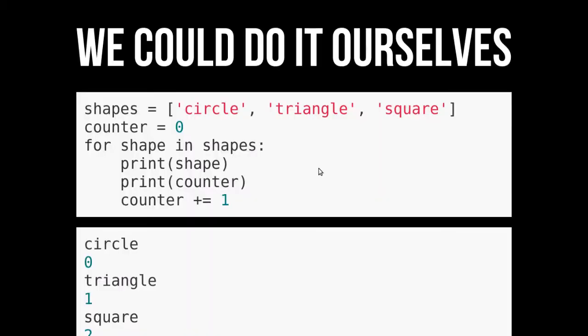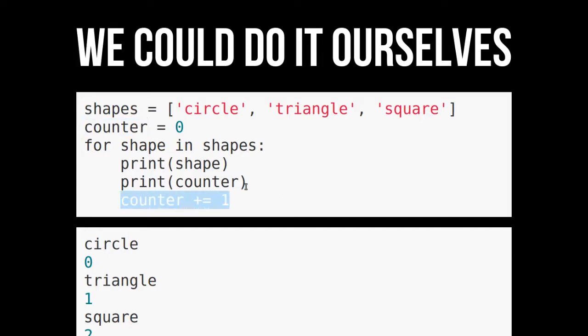So maybe you feel a little bit left out — you could do it yourself. We've made a counter, and then we're going to increment it, and we're also going to print the counter. You can see it kind of fell off here, but you get the idea: circle zero, triangle one, square two.